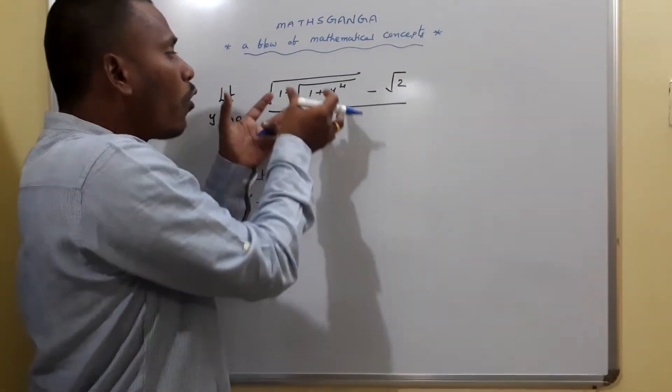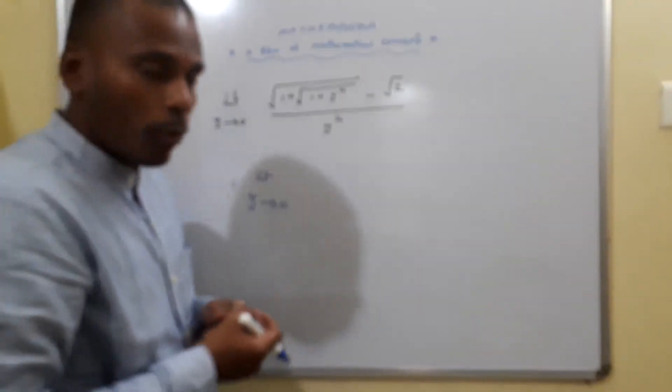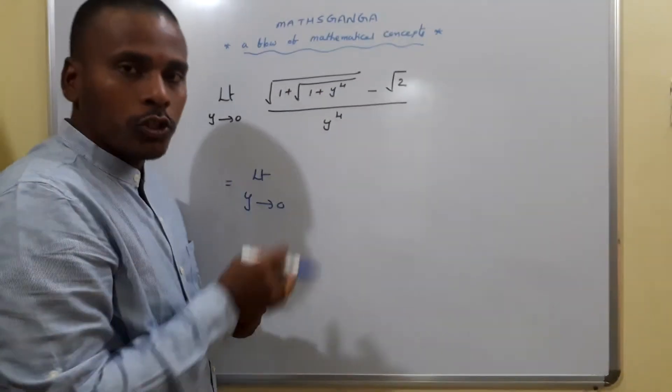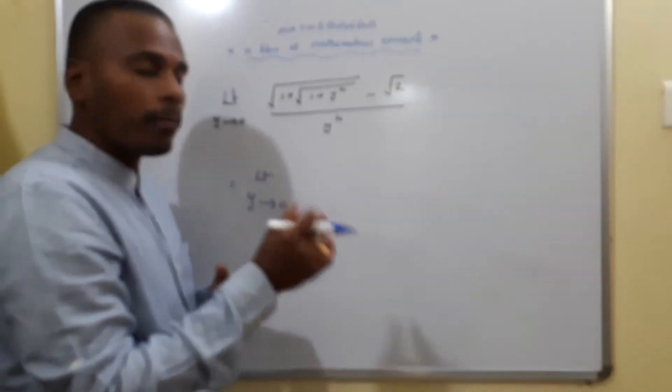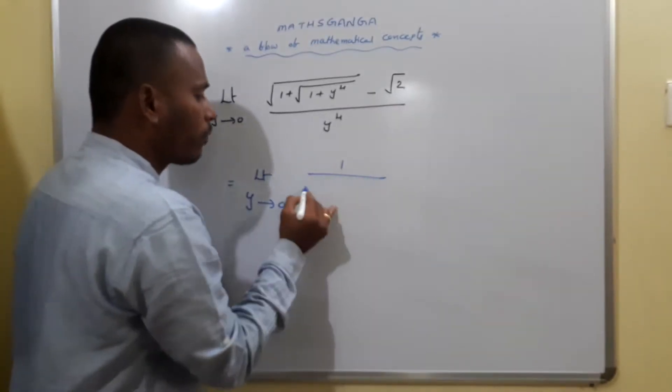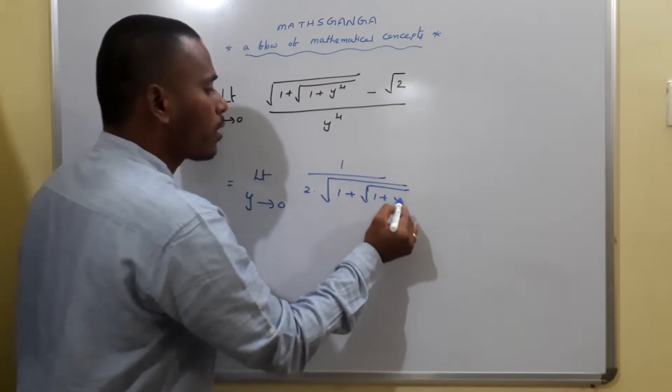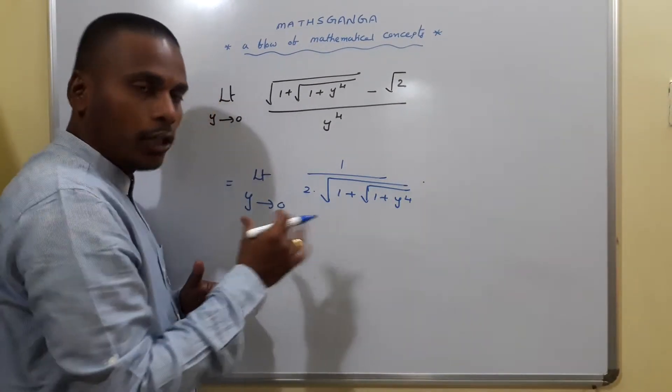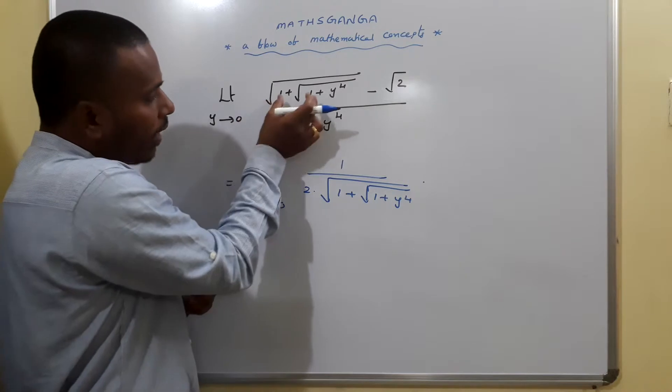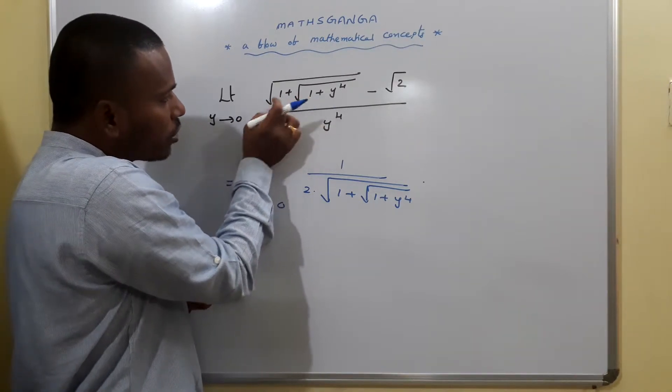We need to write the derivative of the numerator as well as denominator here. For the root of something, the derivative is 1 by 2 root. So 1 by 2 root of 1 plus root of 1 plus y power 4 into this root, the term which is under the root.